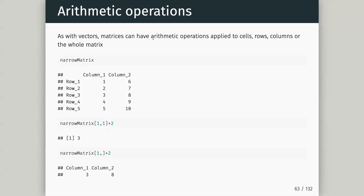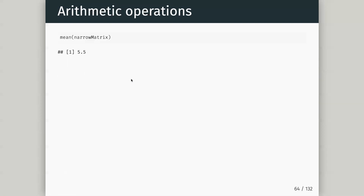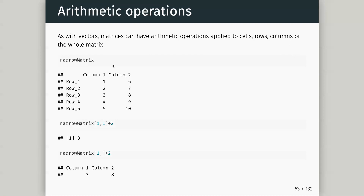Arithmetic operations can be applied to cells, rows, columns, or the whole matrix. If I want to add two to the value at position one one, I pull out that first value and add two to get three. I can also do a whole row — narrow matrix first row, adding two gives me three, three, and so on. I can also apply arithmetic operations to the whole matrix, for example using the mean function on the whole matrix.